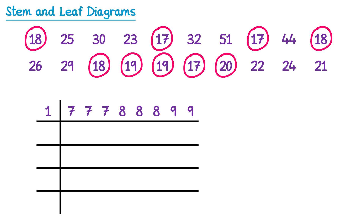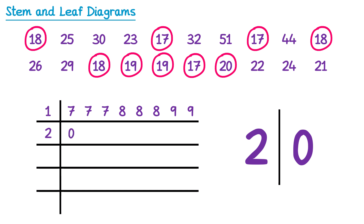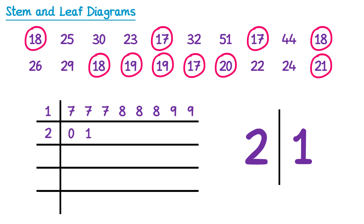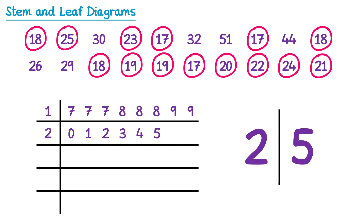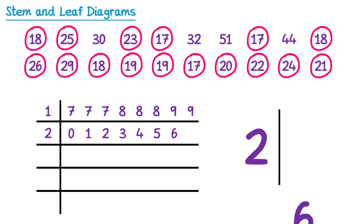The next smallest number is 20, which has a stem of 2 and a leaf of 0, so we start a new row with stem 2 and place a 0. Then 21 — stem 2, leaf 1. Then 22 — stem 2, leaf 2. Then 23, 24, 25, 26, and 29 all go into this same row with stem 2, each with their respective unit digit as the leaf.